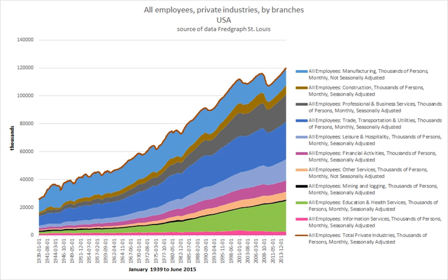The main ways for employers to find workers and for people to find employers are via job listings in newspapers, via classified advertising and online, also called job boards. Employers and job seekers also often find each other via professional recruitment consultants which receive a commission from the employer to find, screen and select suitable candidates. However, a study has shown that such consultants may not be reliable when they fail to use established principles in selecting employees.